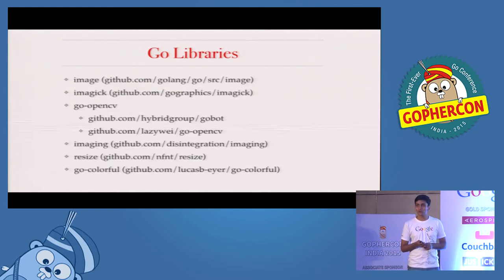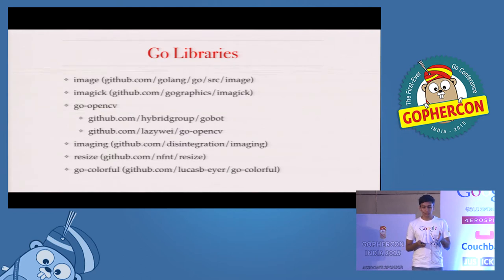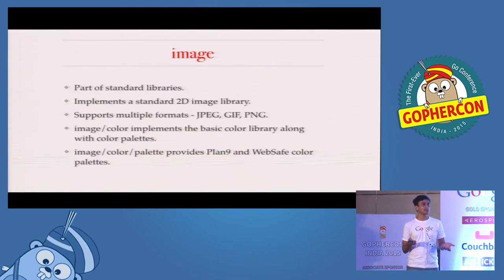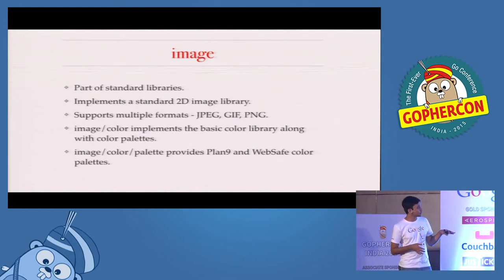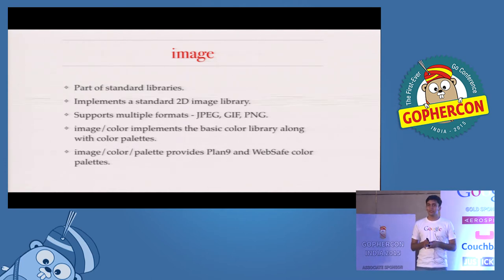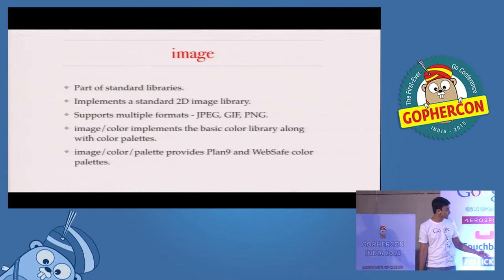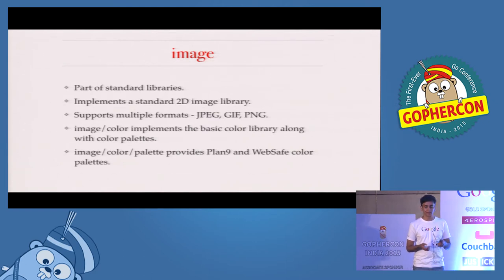These are some of the available Go libraries I found when looking through the internet, and I'll go through them one by one. The first one is the standard library, Go image. It implements a standard 2D image library. You can give input PNG, JPG, or GIF and process that. It also has a sub-project, image/color, which gives you two color palettes: Plan 9 and WebSafe — very limited, but available as part of the standard library.